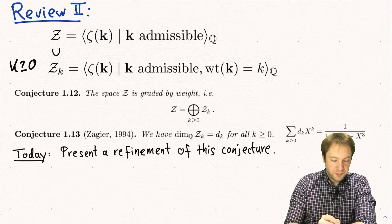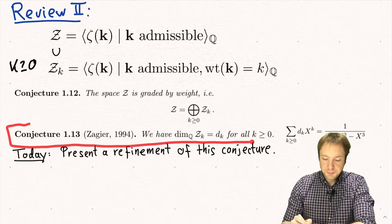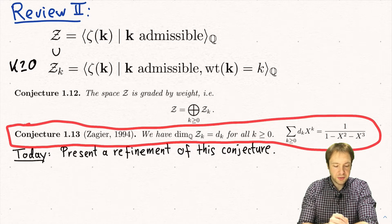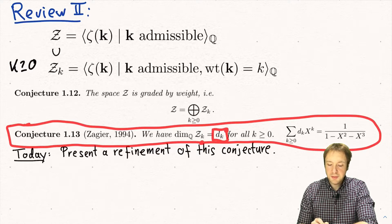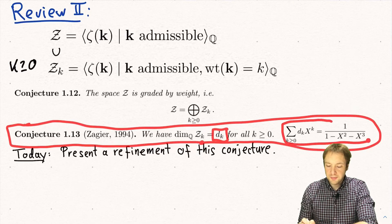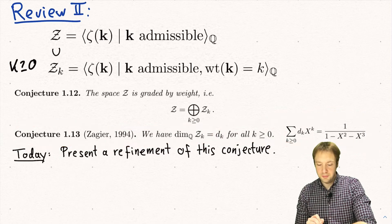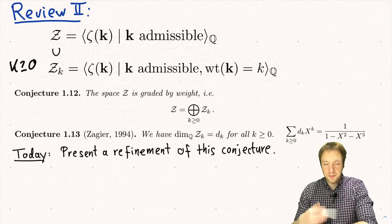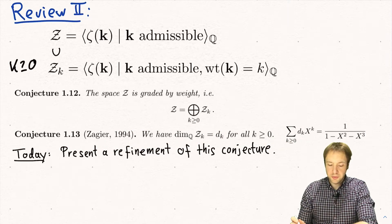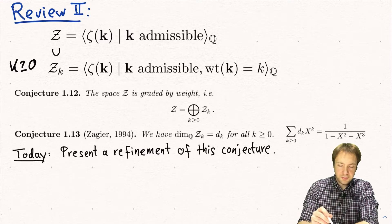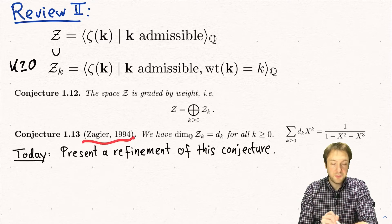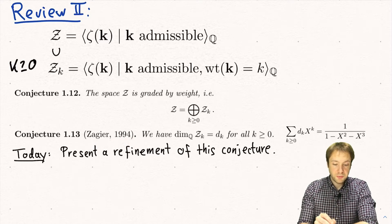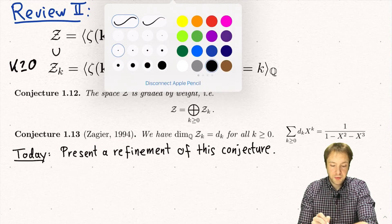Then we saw this conjecture due to Zagier, who gave an explicit conjecture for the dimension of these spaces Z_k. The conjecture is that they are given by numbers d_k, which are given by a certain rational function and also satisfy a recursion formula. Today we want to give a refinement of this conjecture due to Broadhurst and Kreimer, and this will also lead to modular forms — it will give a connection to modular forms.